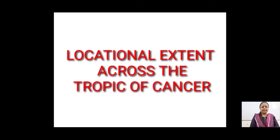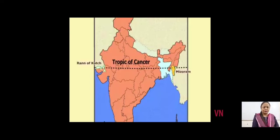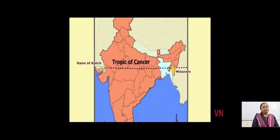The first factor in the list is the latitudinal extent of the country and the Tropic of Cancer. If we see this map, it is clearly understood that the Tropic of Cancer passes almost from the centre of the country. Therefore, if we recall the heat zones, we can understand that the northern part of the country experiences temperate or subtropical type of climate, whereas the southern portion, to the south of Tropic of Cancer, lies in the torrid zone or tropical zone and experiences tropical type of climate.